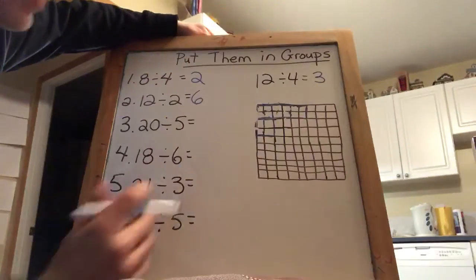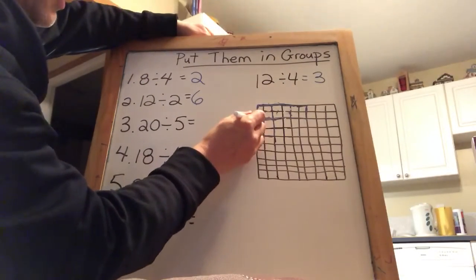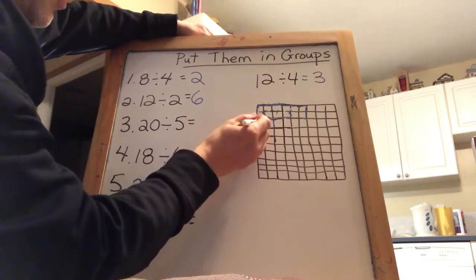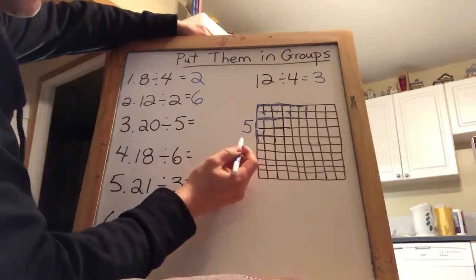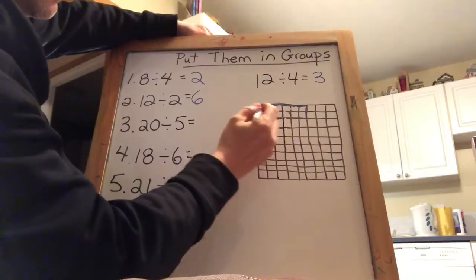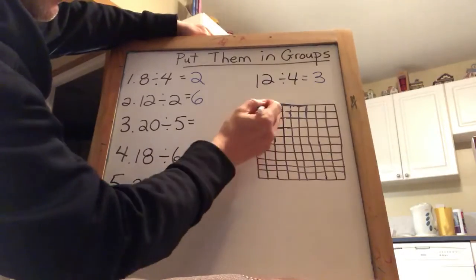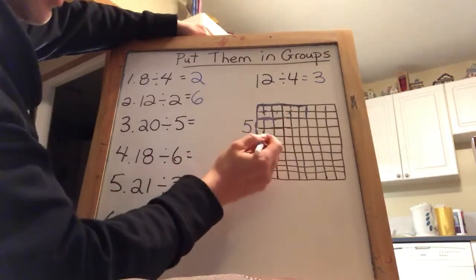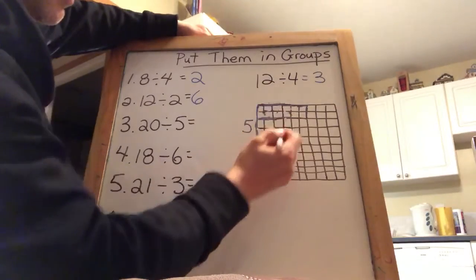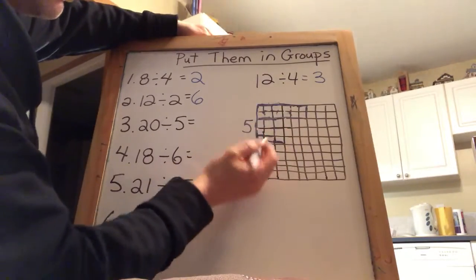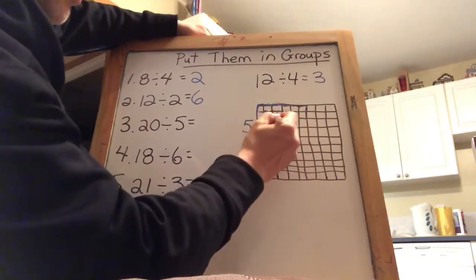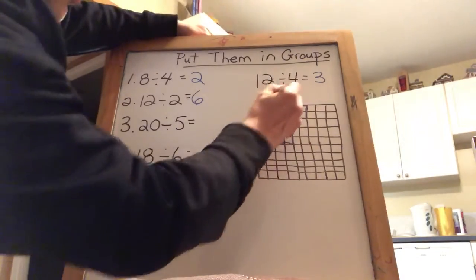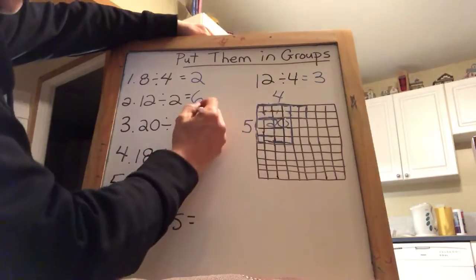Let's look at 20 divided by 5. So now we have 5 rows here. 1, 2, 3, 4, 5. And how far would we have to go across to get 20? So there's 5. Another row, or another in each row would give 10. Another in each row would give me 15. Another in each row would give me 20. Now I have 20 in here, and I've got 4 rows across. So 20 divided by 5 is 4.